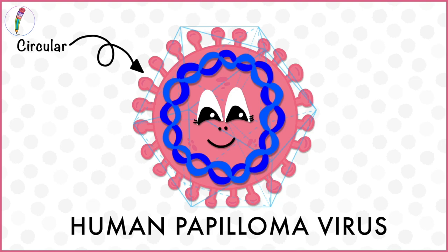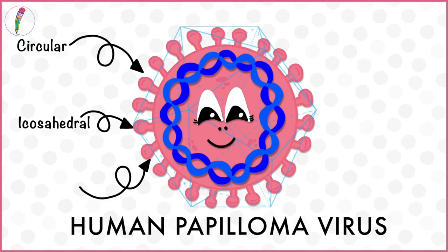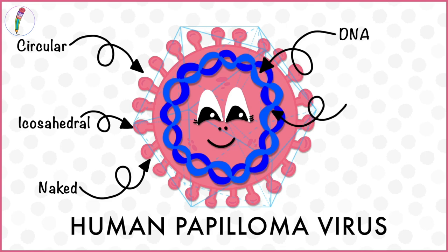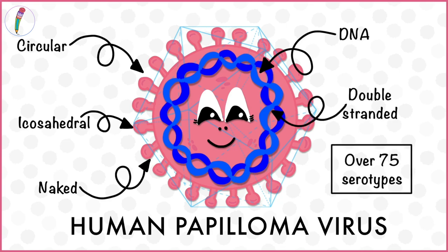HPV is circular in shape and is icosahedral in structure. It is a naked virus that is extremely sturdy. This virus contains DNA, which is double-stranded. HPV has over 75 serotypes, all of which might have different presentations.